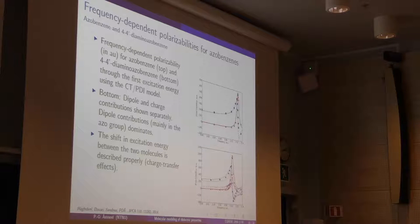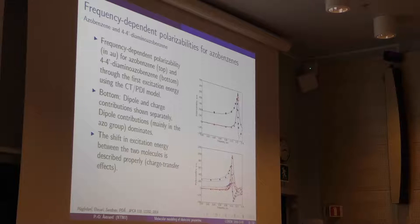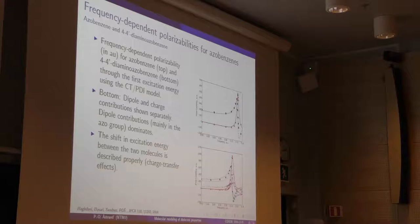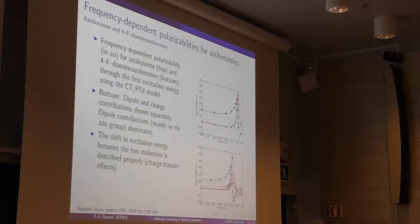We did that for about 20 different types of azobenzene substitutions, and only one gave us problems — we don't really understand why. But again, that has to do with introducing some bond lengths in some groups that we can't really model the charge transfer in. That is when we run into problems.